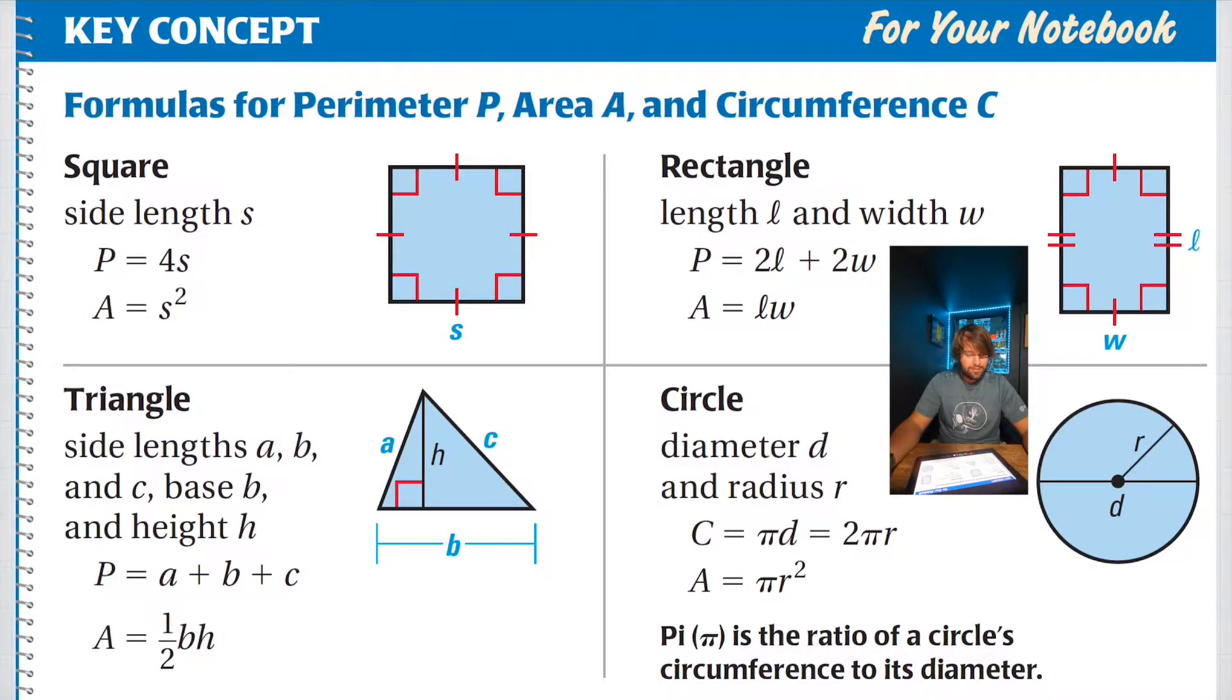So here's our key concepts for the day. These are for your notebook. You want to write them down. Formulas for perimeter, area, and circumference. If you're looking at a square with side length s, perimeter is going to equal just 4 times whatever one of the side lengths is. Area is going to equal a side length squared. So a side length times itself. So if this was 5, it would be 5 times 5, or 5 squared.